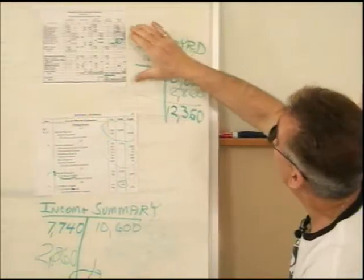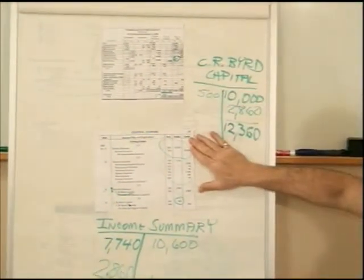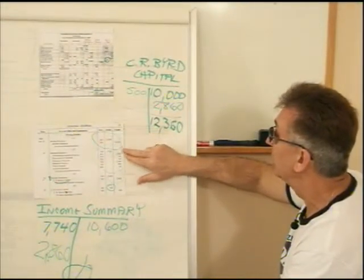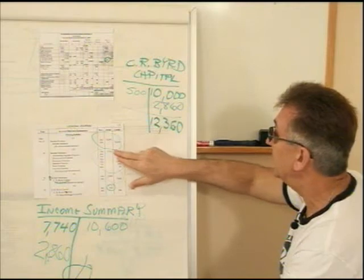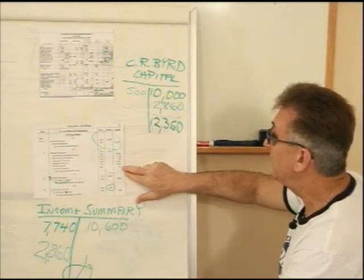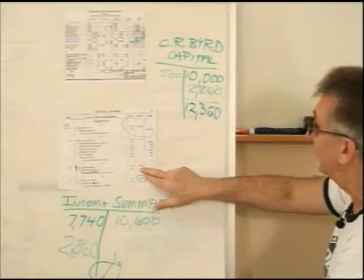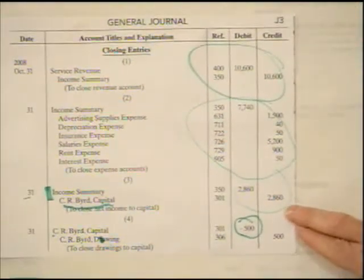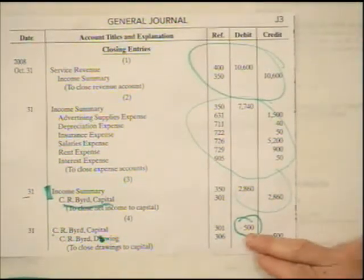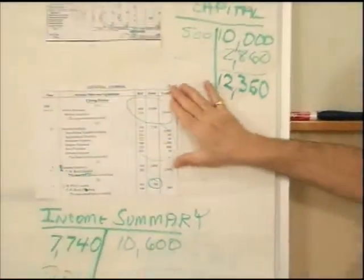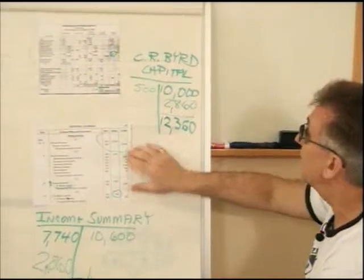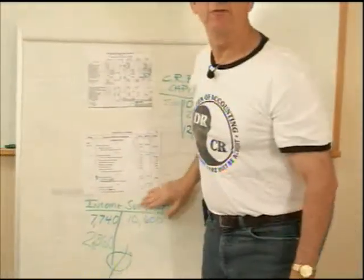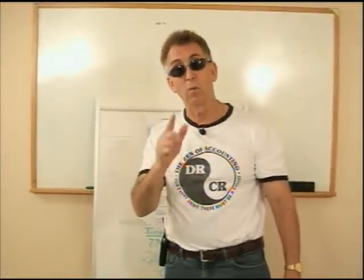In summary, we use this worksheet to create our four closing entries. We close out revenue to income summary to make all revenue zero. We close out expenses to income summary to make all expenses zero. Then we close out the temporary income summary account with the net balance — which should always be our net income — to the capital account. The final entry closes out the drawing and reduces the capital. Those are the four closing entries. You use the general journal to facilitate them and the worksheet to help you create them. That's all I have for you today and I will see you guys real soon.